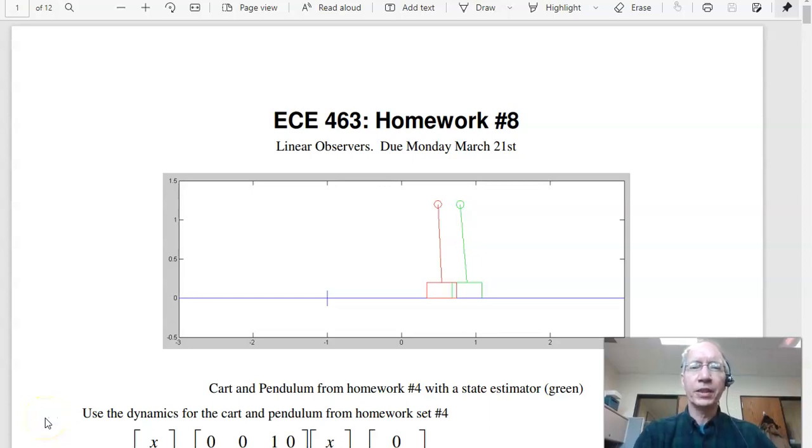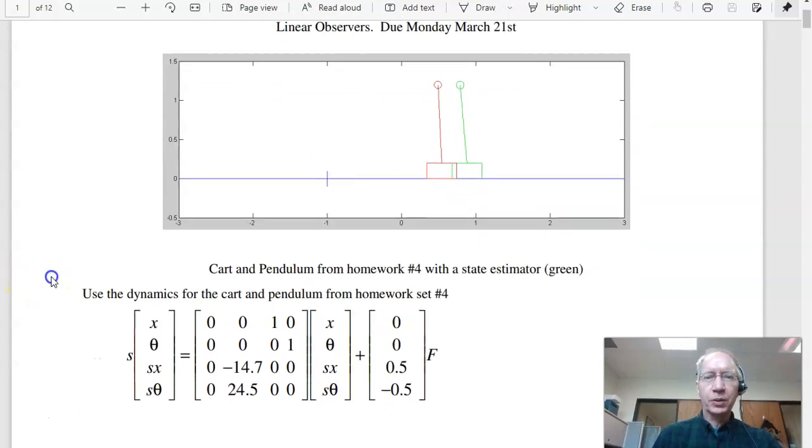Welcome to 463 homework set number eight. This homework set looks at linear observers. The problem we're dealing with is the cart-pendulum system. Suppose I've got a cart-pendulum, the dynamics from homework set number four. Suppose I can only measure position and angle. Come up with a stabilizing feedback control law. Well that's a problem because with what we know with pole placement I need full state feedback. If I can only measure two of the states I can't use full state feedback. So instead what we do is we build an observer to estimate the states then feedback the state estimates.